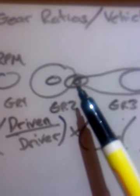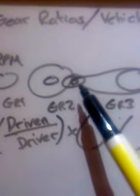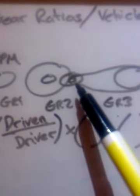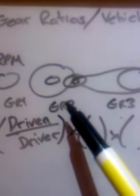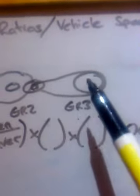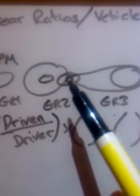Count the number of teeth on the input shaft and the number of teeth on the output shaft. It's driven over driver, so the output shaft is driven by the input shaft — driven teeth divided by driver teeth gives you the gear ratio for that stage. Then rear sprocket over front sprocket gives you the gear ratio for the final drive. Multiply them all together.